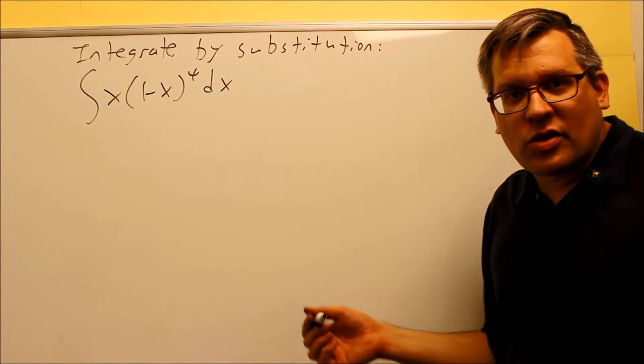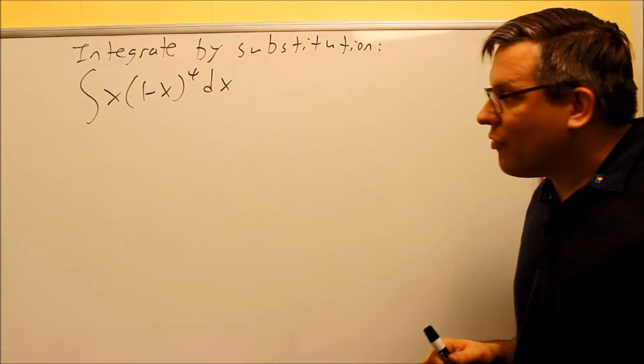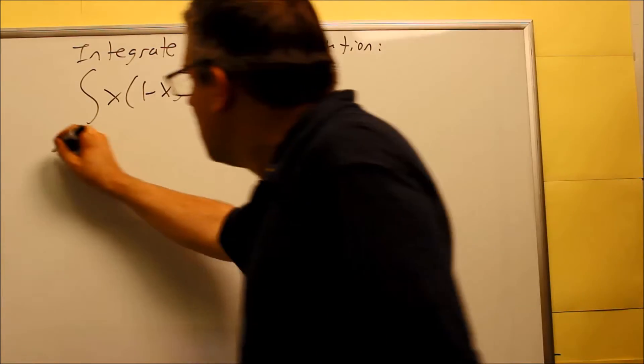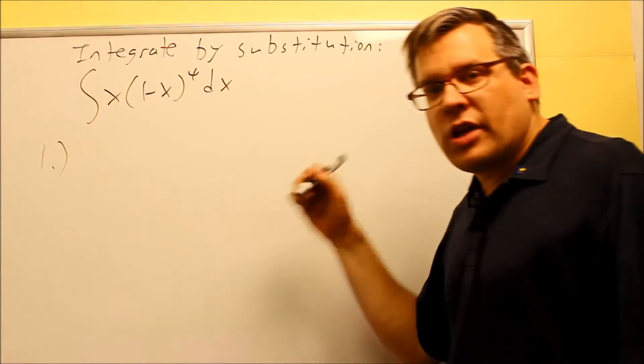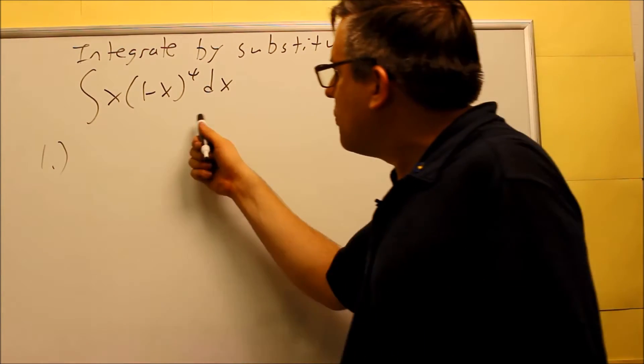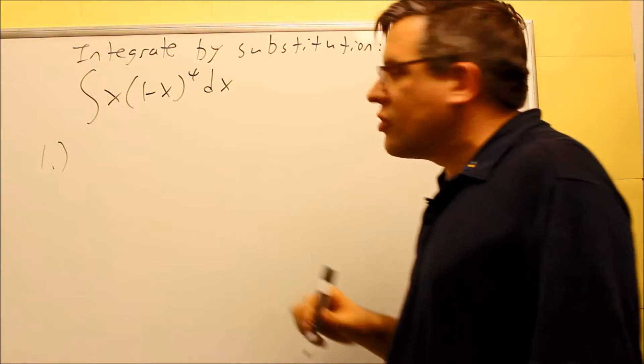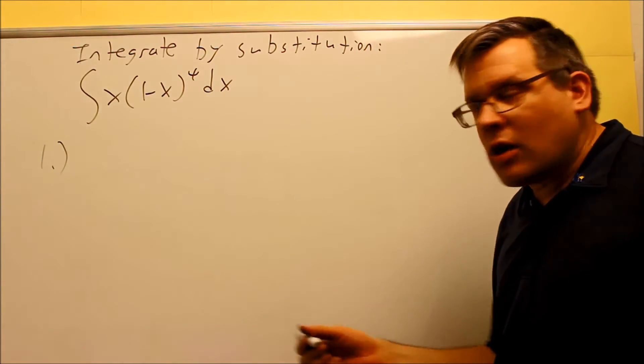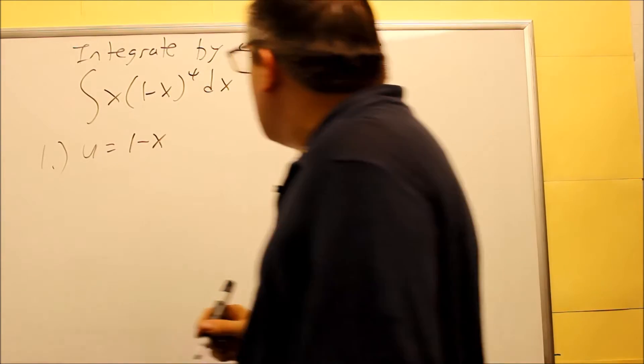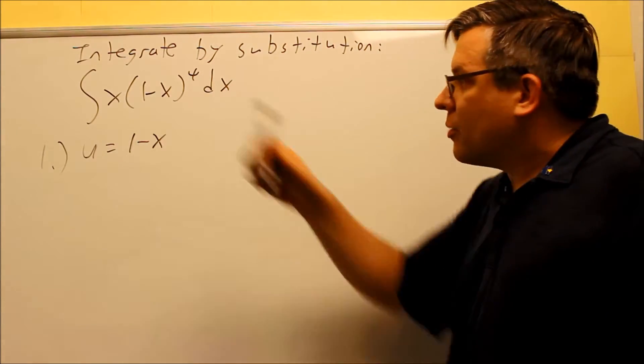Now, you may not know you have to do that process until you actually get into the four-step process. So we're going to start right now and do the four-step process, just like we've done before, and I'll show you what extra thing you have to do in order to make this work. The first thing we'll do is pick our U. The U is always going to be something that's inside of something else, our inside function there. So your U is going to be equal to 1 minus X, the part inside the parentheses.